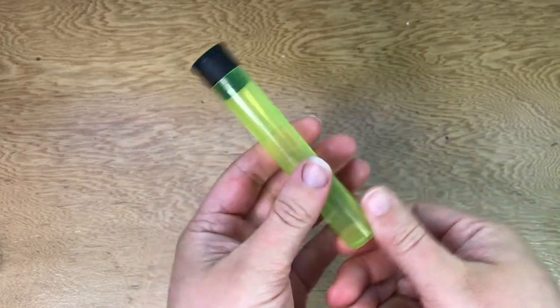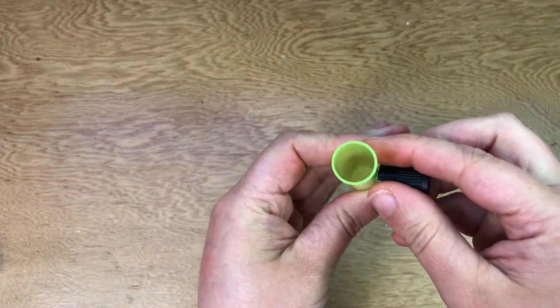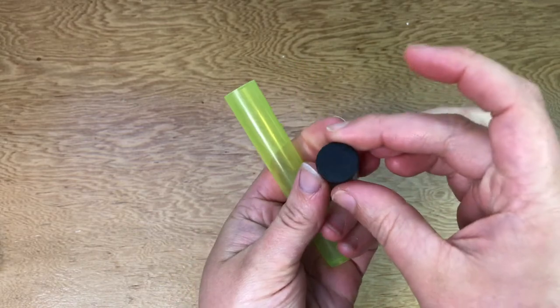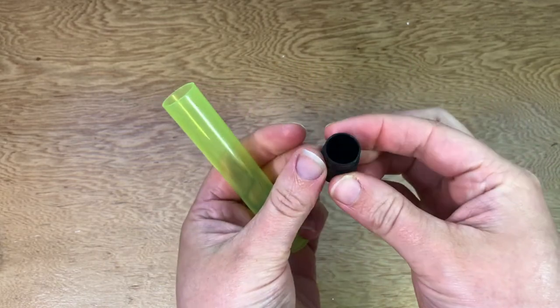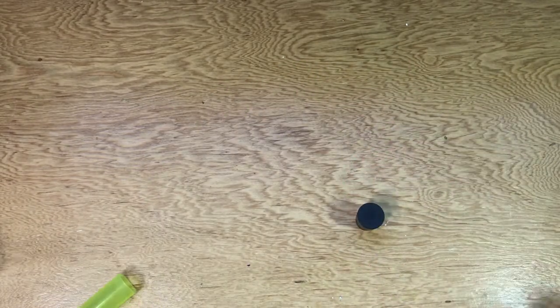The first hemp wick holder I'm going to show you how to make is using a dupe tube. Your hemp wick is going to go inside and all you need to do is pierce a hole in the lid. So let's do that.